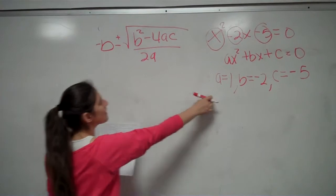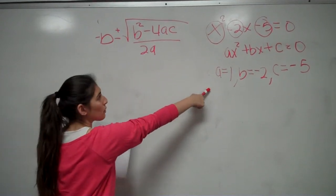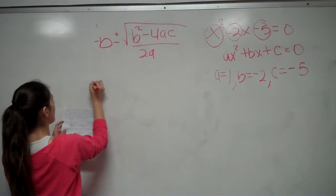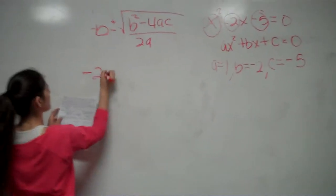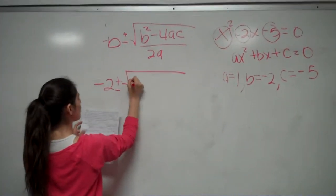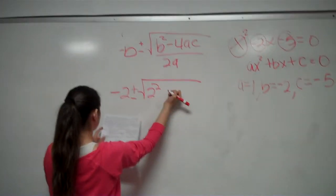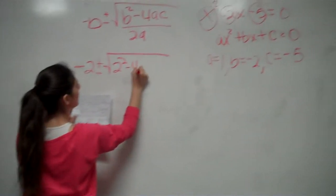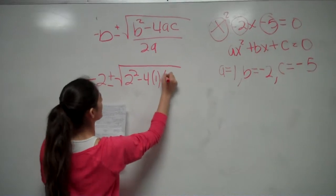Using this, you plug these numbers into the quadratic formula and rewrite it as negative 2 plus or minus the square root of 2 squared minus 4 times 1 times negative 5, all over 2 times 1.